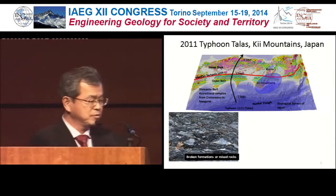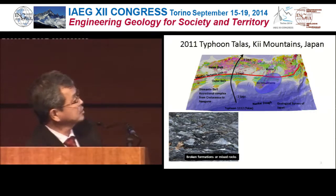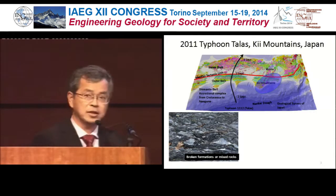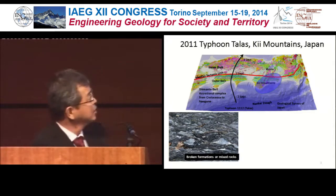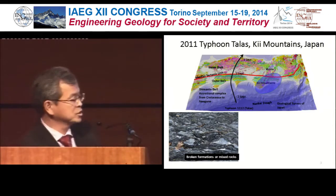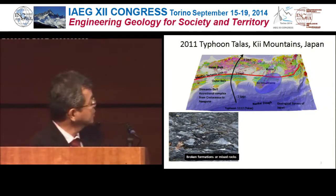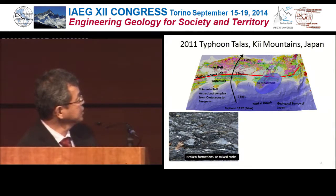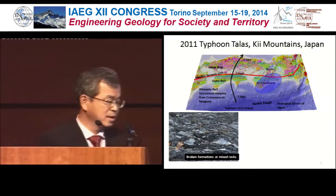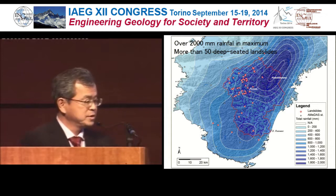This is the median tectonic line, a big fault. The northern part is the so-called inner belt and the southern part the outer belt, where a Shimanto belt — an accretional complex from Cretaceous to Neogene — is widely distributed, characterized by broken formations or mixed rocks and many thrust folds. That typhoon brought over 2,000 millimeters of rainfall at maximum and more than 50 deep-seated landslides.